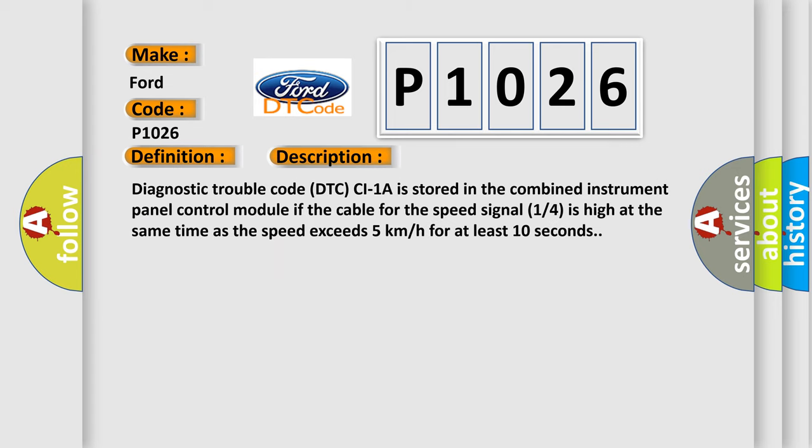Diagnostic trouble code DTC CI1A is stored in the combined instrument panel control module if the cable for the speed signal 14 is high at the same time as the speed exceeds 5 km per hour for at least 10 seconds.